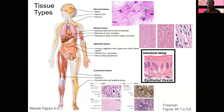Those are the four broad categories and I do want you to know all four of them. Nervous and muscle tissue will come back to the unique properties — both are electrically excitable — when we get to them.